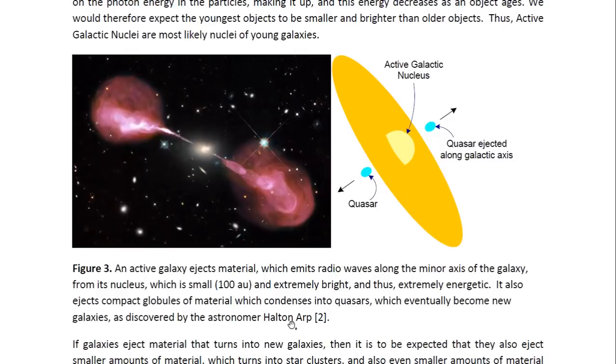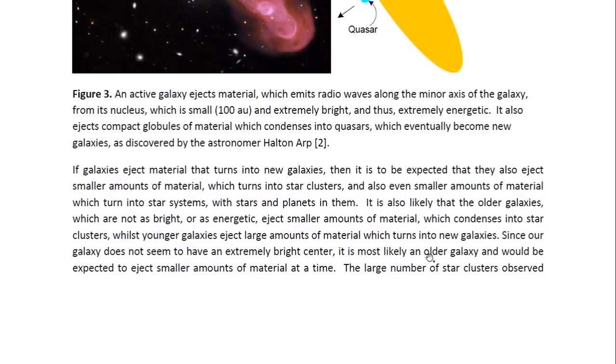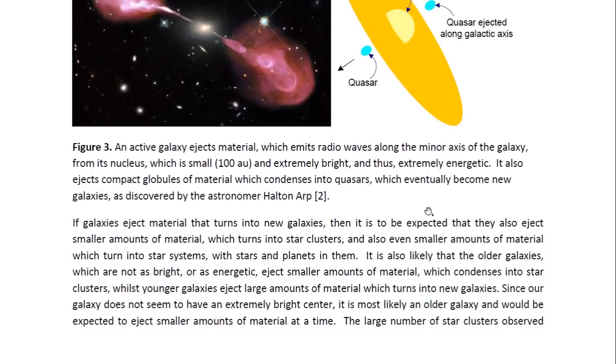Halton Arp, the astronomer that wrote the book Seeing Red, discovered that these active galaxies eject material along their minor axes, which are perpendicular to the plane of the galaxy, which condense into quasars, which in turn form galaxies. So these active galaxies give birth to other galaxies. In time, these galaxies age and become older galaxies, like our galaxy seems to be, because it's not as bright at the center.